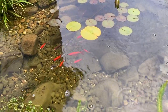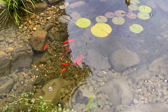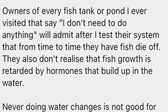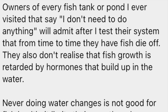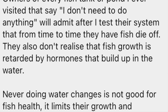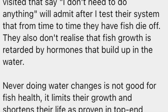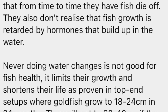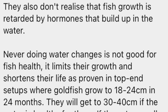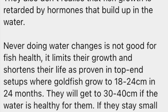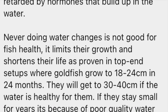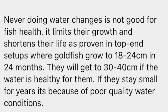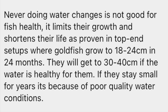If it comes back to bite me, you guys will be the first to know. Blair then writes: 'Owners of every fish tank or pond I ever visited that say I don't need to do anything, will admit after I test their system that from time to time they have fish die off. They also don't realise that fish growth is retarded by hormones that build up in the water. Never doing water changes is not good for fish health. It limits their growth and shortens their life, as proven in top end setups where goldfish grow 18 to 24 centimetres in 24 months — they will get to 30 to 40 centimetres if the water is healthy for them. If they stay small for years, it's because of poor water quality and conditions.'